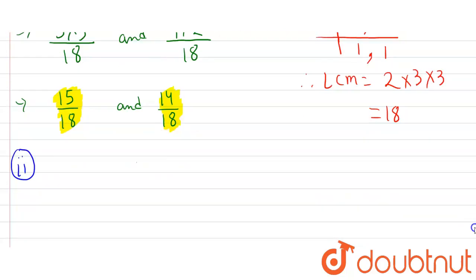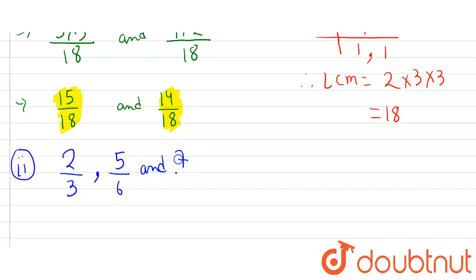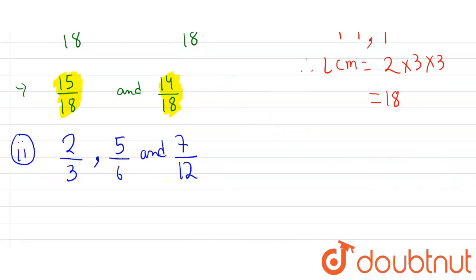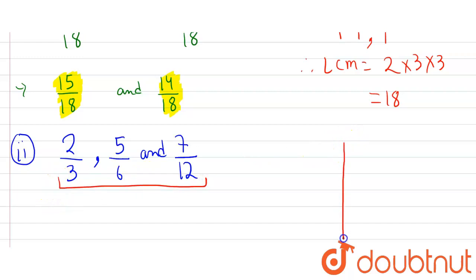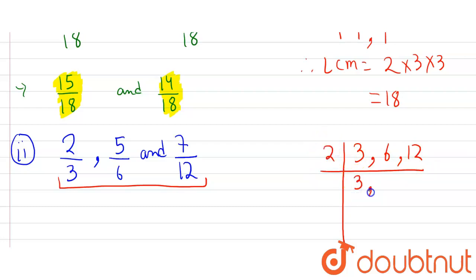The second part is two upon three, five upon six, and seven upon twelve. Here we can see that the denominators are different, therefore we'll find the LCM of 3, 6, and 12.